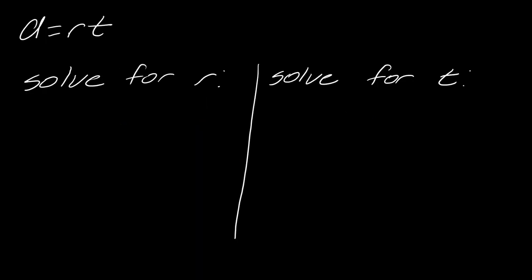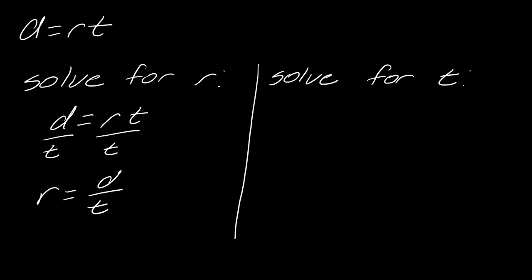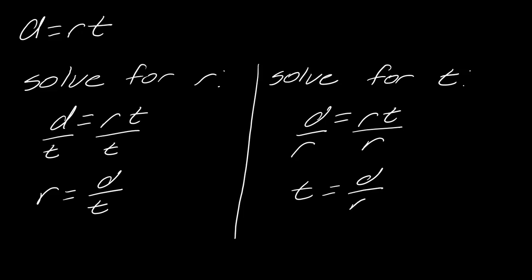Something to notice is that you can actually rearrange this formula. If I wanted to solve for R, I would just divide by T and get R equals D over T. And then if I wanted to solve for T — so if I have D equals RT — I would just divide by R and get T equals D over R. This is just pointing out that we can view the distance formula in a couple of different ways.